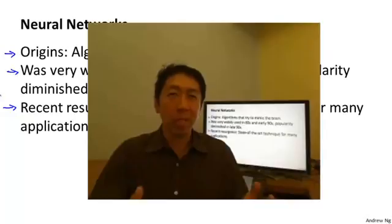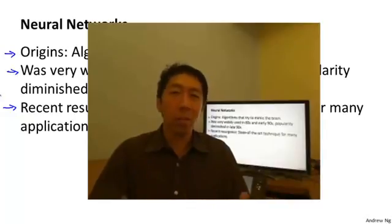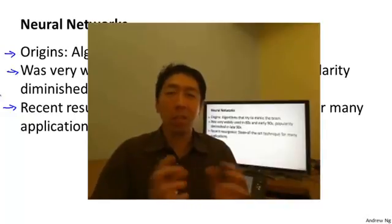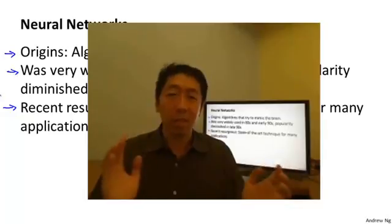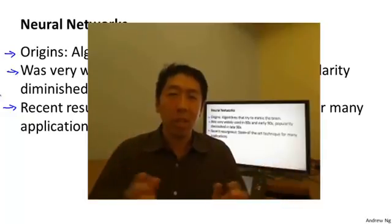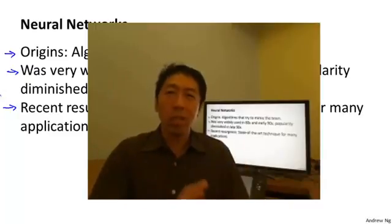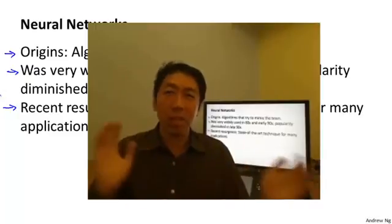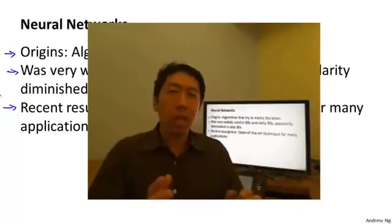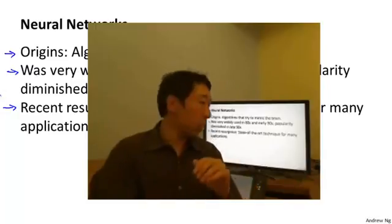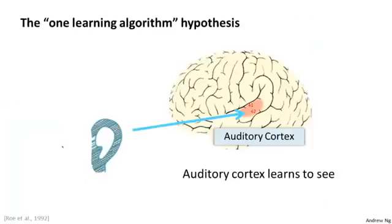It seems like if you want to mimic the brain, you'd have to write lots of different pieces of software to mimic all of these different fascinating, amazing things that the brain does. But there's this fascinating hypothesis that the way the brain does all of these different things is not with a thousand different programs, but instead with just a single learning algorithm.